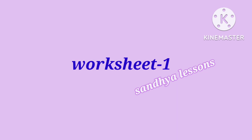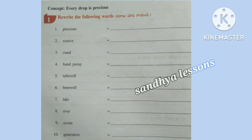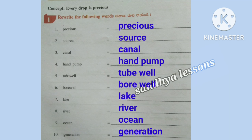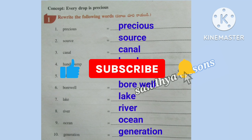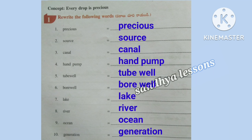Worksheet 1. First, rewrite the following words: Precious, Source, Kennel, Hand Pump, Tube Well, Bore Well, Lake, River, Ocean, Generation.